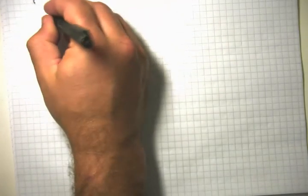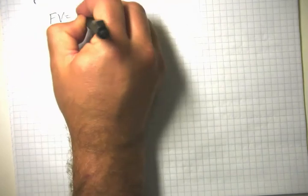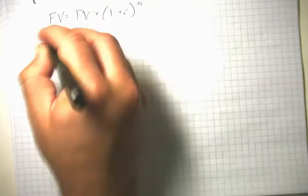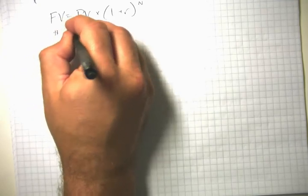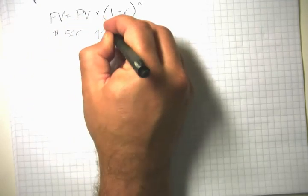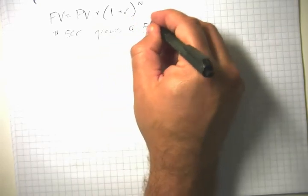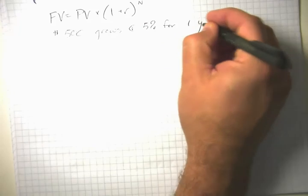As an illustration of that, I'll recopy the formula: FV = PV × (1 + r)^n. If we have $500 that grows at 5% for one year,